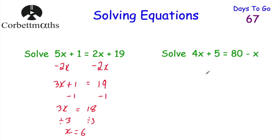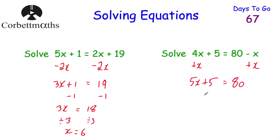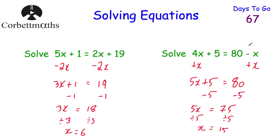We've got 4x's and subtract x, which is minus 1x — that's the lowest number of x's. To get rid of minus 1x, we add x to both sides. So 4x plus x is 5x, and we still have plus 5. On the right-hand side, 80 subtract x plus x leaves just 80. So 5x plus 5 equals 80. Take away 5 from both sides: 5x equals 75. Divide by 5: x equals 15. Check: 4 times 15 is 60, plus 5 is 65. And 80 take away 15 is 65. Perfect. Well done.